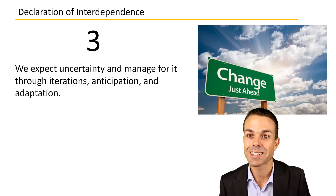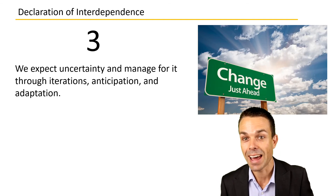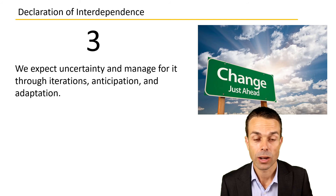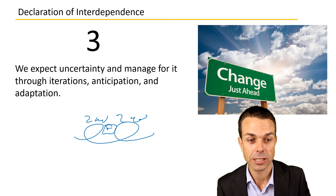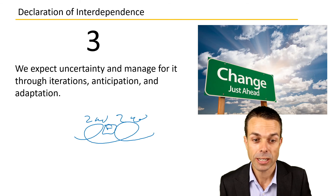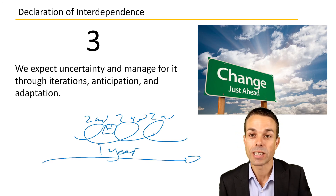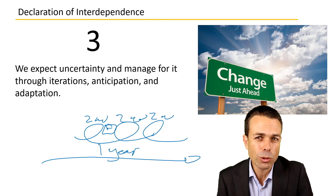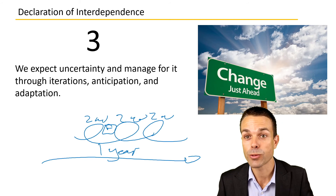Principle number three: we expect uncertainty and we manage for it through iterations, anticipation, and adaptation. By iterating every two weeks and delivering something in between — a feature or part of a feature — if we need to adjust, we can in the next iteration. We're not waiting a whole year to deliver something and then find out it's not what the customer wanted. We stay close to the customer and to the process in order to manage that uncertainty through iterations.